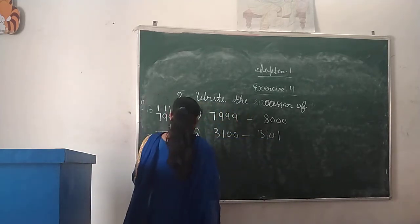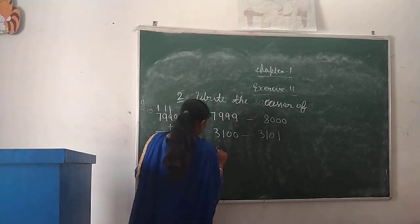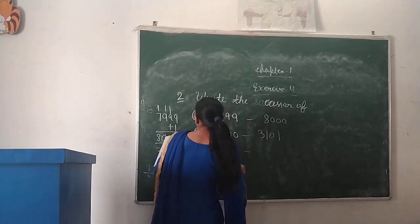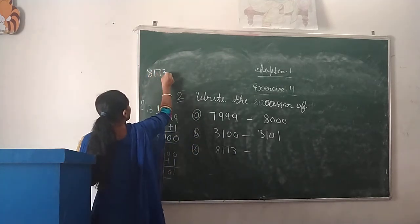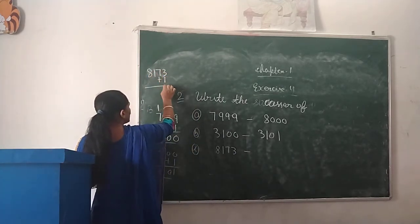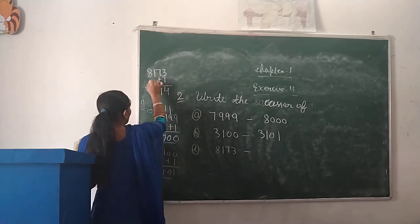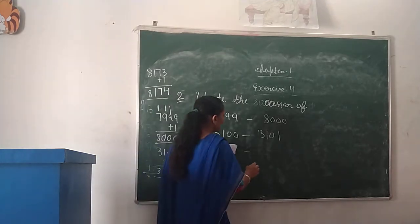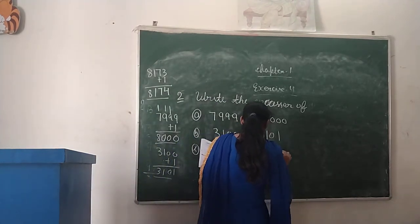Next, Part C: 8,173. We will add 1. 3 plus 1 is 4. 7 stays 7. 1 stays 1. 8 stays 8. So the successor is 8,174.